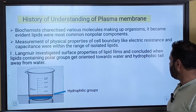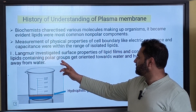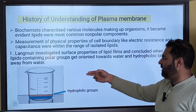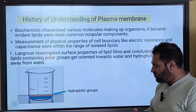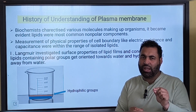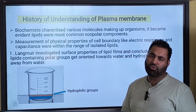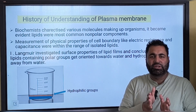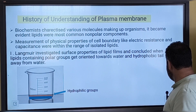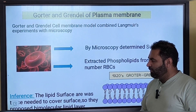Then Langmuir investigated the surface property of a lipid film. He made a lipid film and concluded that lipids containing polar groups get oriented towards water, with hydrophobic tails away from the water. So if we put a lipid molecule having polar and non-polar groups, the polar group will face the water and the non-polar tails will hide from the water.